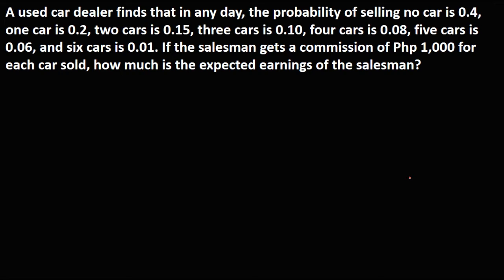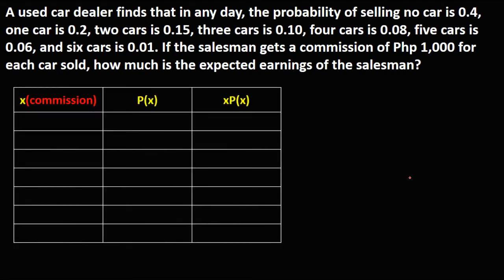First, we need to create a probability distribution of X. X for the commission or the expected value, P of X for the probability of the expected value, then X times the P of X, so multiply X and the P of X.